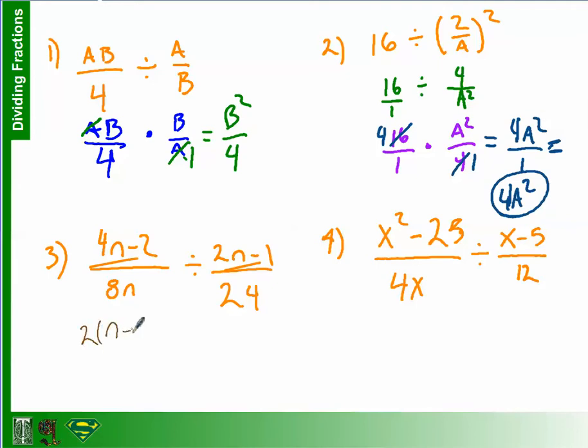2 times the quantity N minus 1. So you have to factor that first term. So 2 goes into 4N twice. That's why the 2N. And 2 goes into 2 once. And then we still have the 8N here. We still have division. And we have 2N minus 1 over 24. All right.